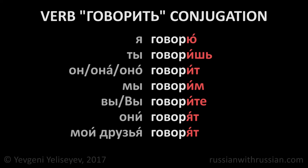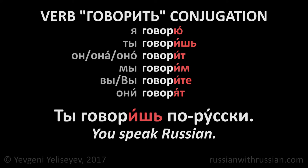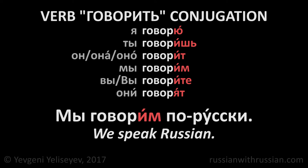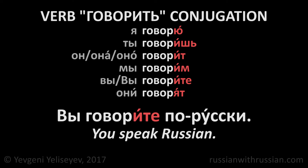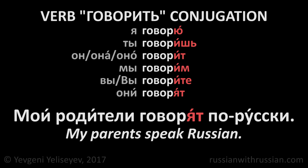Let's see some examples. Я говорю по-русски — I speak Russian. Ты говоришь по-русски — you speak Russian. Мой брат говорит по-русски. Мы говорим по-русски. Вы говорите по-русски. Марина и Антон говорят по-русски. Мои родители говорят по-русски.